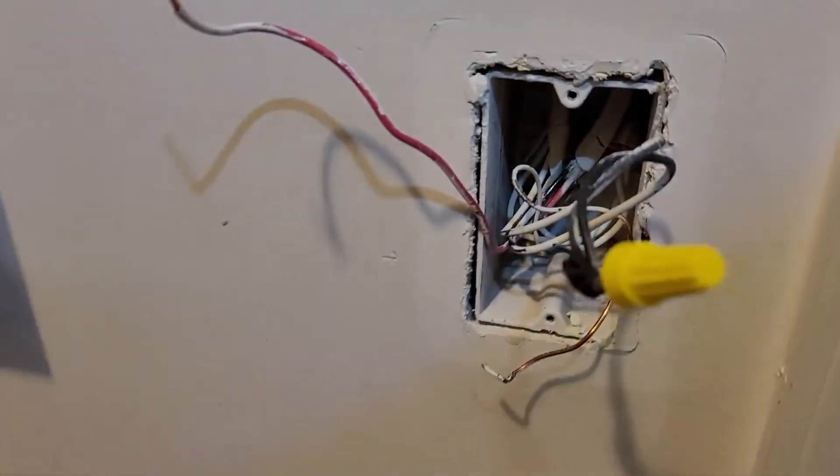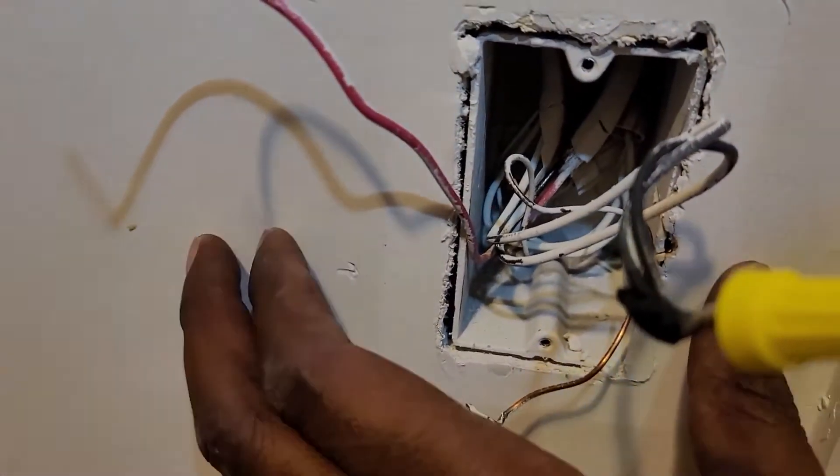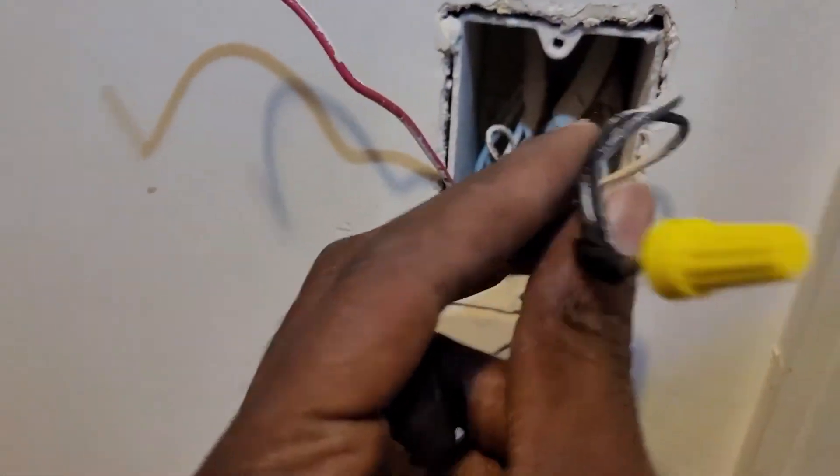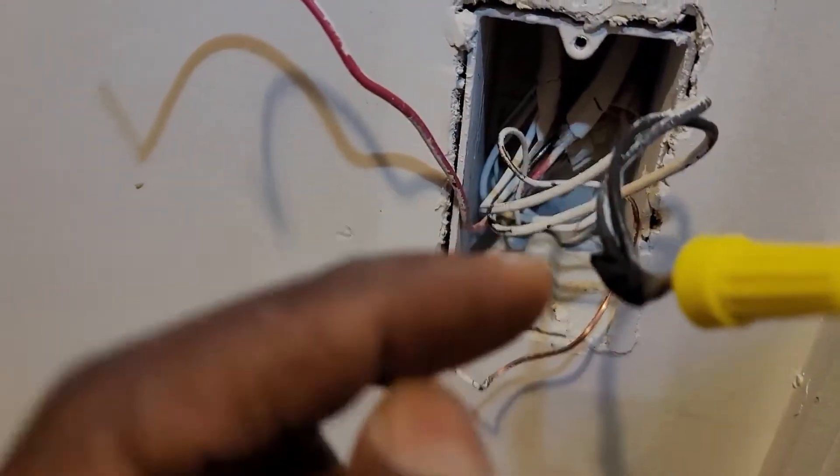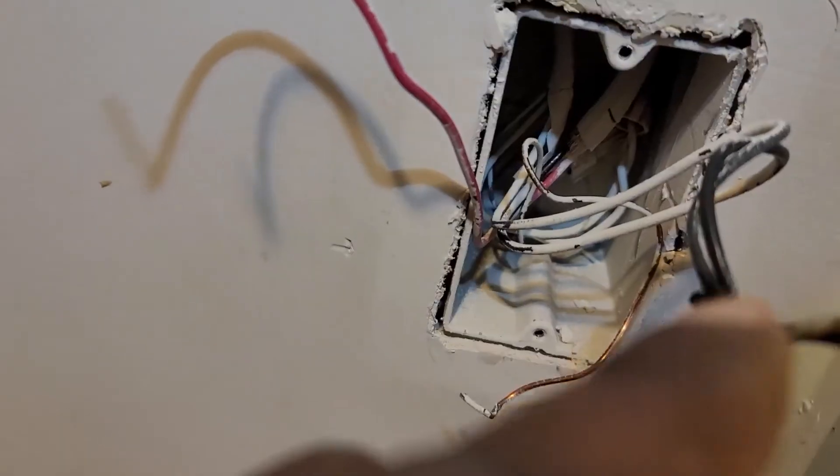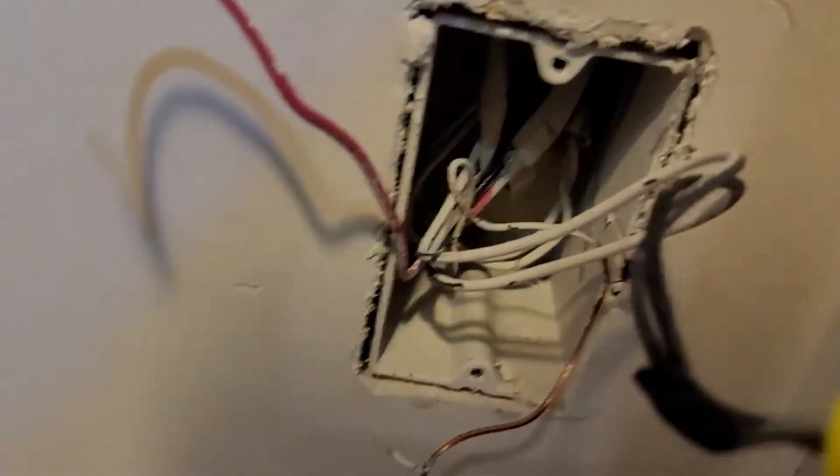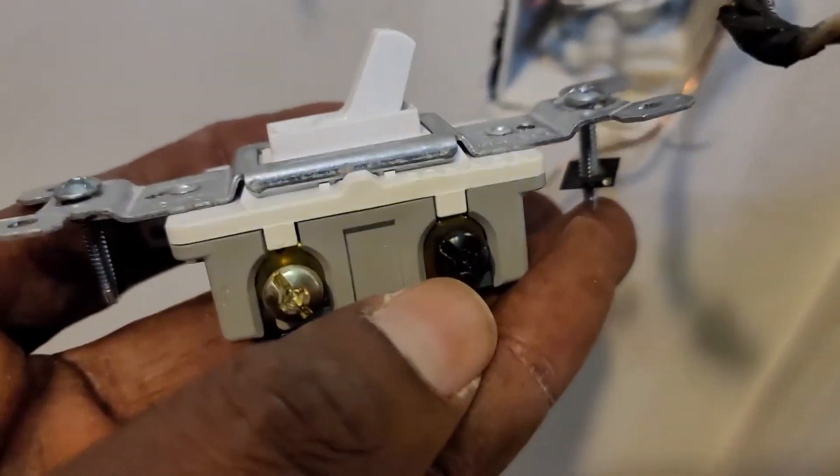On the other side, the companion switch that was here, I removed it altogether. I connected both black wires—the one coming from the black screw. This one was taped here because initially it was over here, but I removed it.